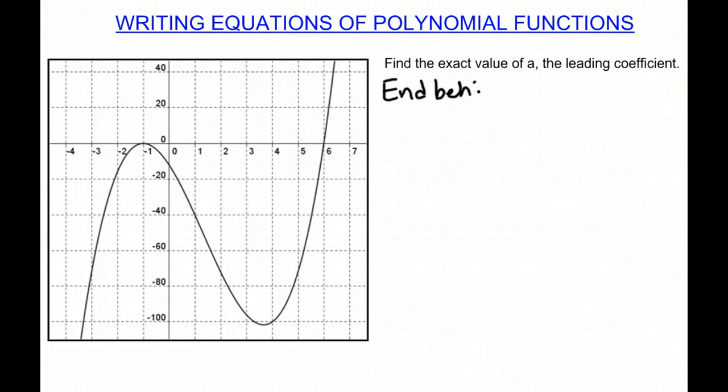And we note that it is decreasing and then increasing. So that means that we have an odd degree and a positive leading coefficient. Then we want to look at our zeros.